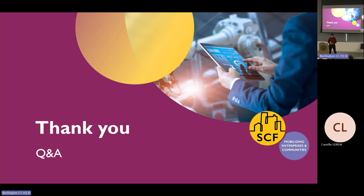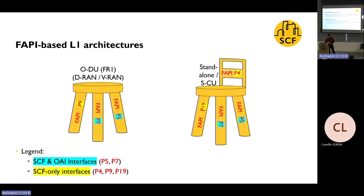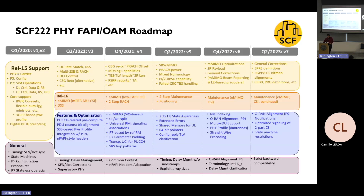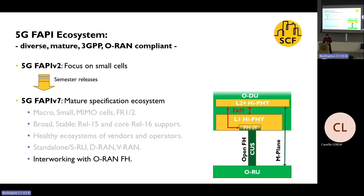Question: You mentioned the P9 interface — that's a new interface, right? That wasn't there before. Can you say a bit more about what P9 is? Right now you have P5 and P7, which provide control between layer one and the upper layers. But you have to have some way of configuring the fronthaul. P9 is that arrow on the left that goes to the fronthaul — it's an important interface to have. And yes, it's already there — it's been in FAPI since version 2.